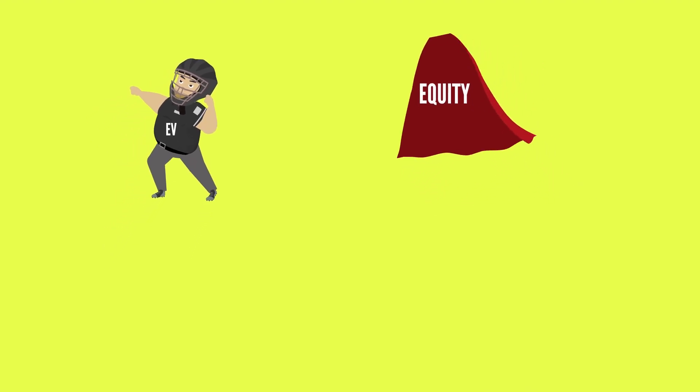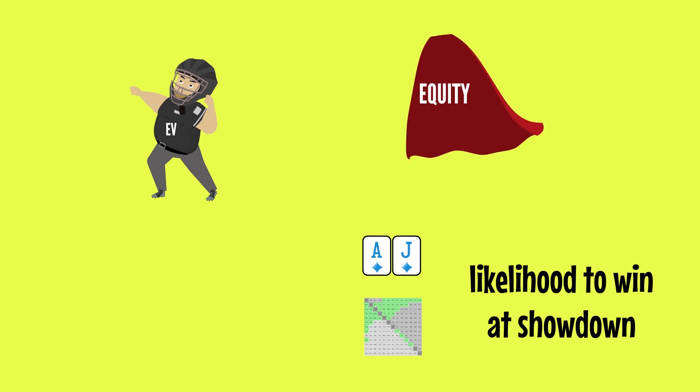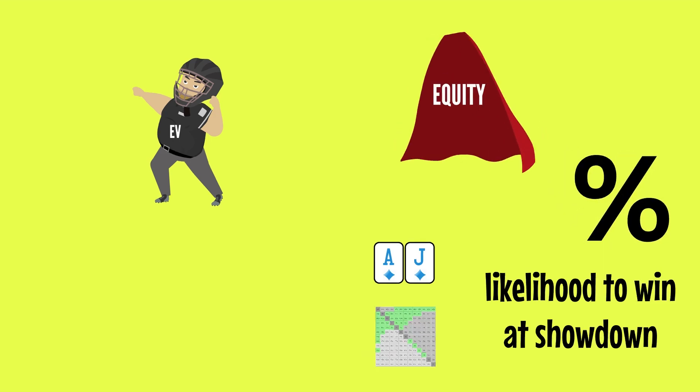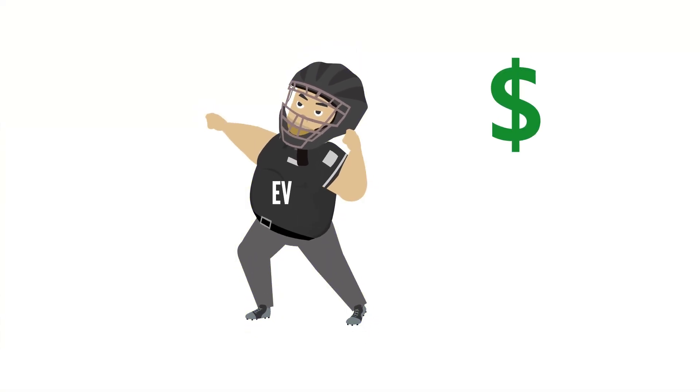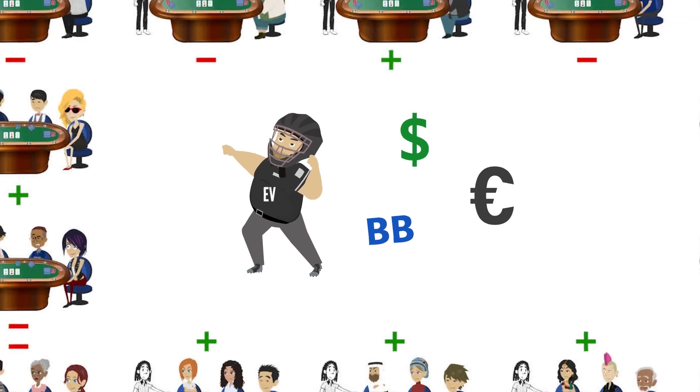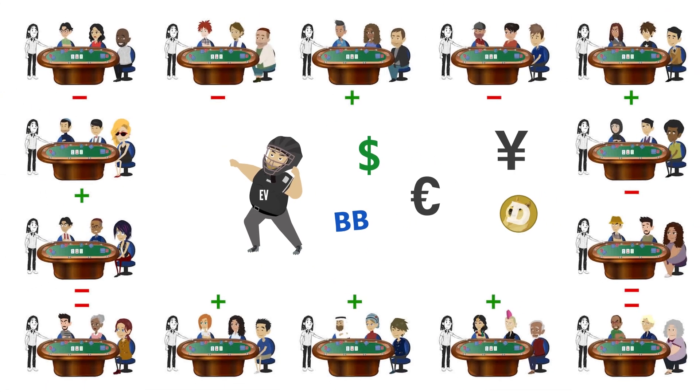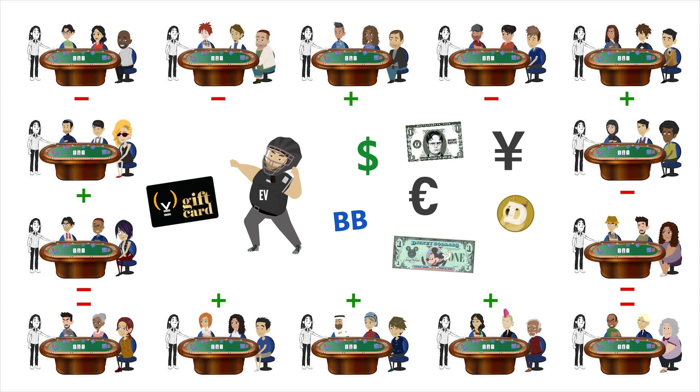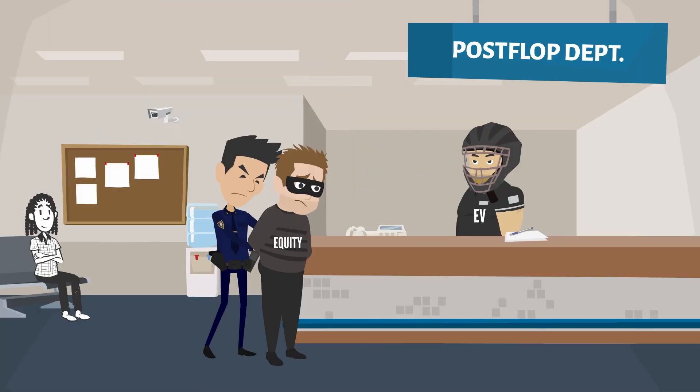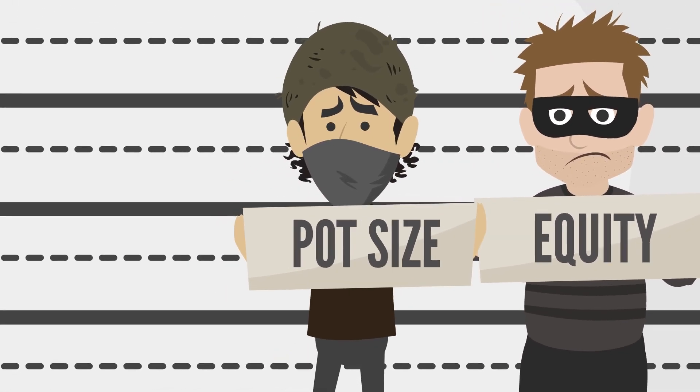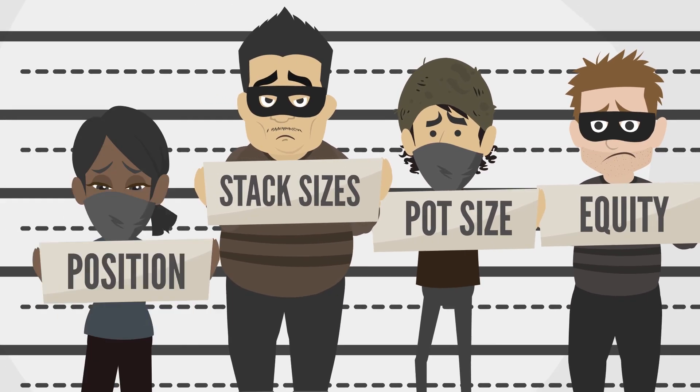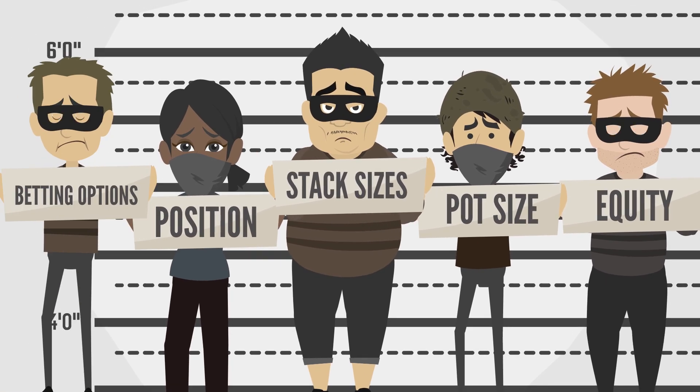Equity is a measurement of how often our hand or range is likely to win a showdown. It's measured in percentage. EV is measured in dollars, big blinds, euros, yen, dogecoin, anything with monetary value. While equity is a major variable in our EV, it doesn't act alone. The current pot size, stack sizes, positions, and betting options all contribute to our EV in a variety of ways.